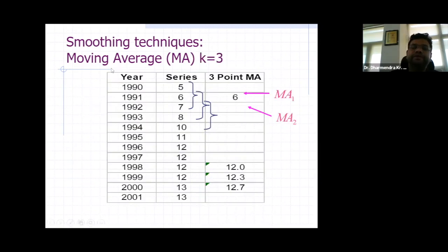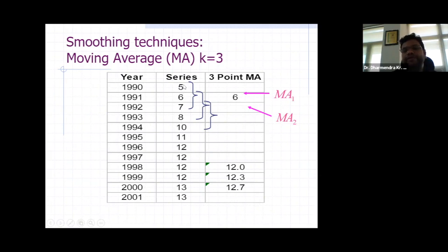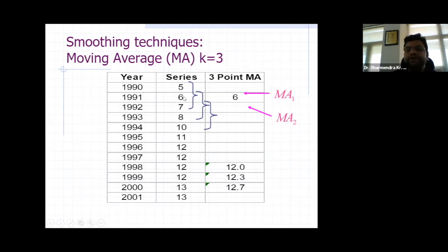Suppose we have yearly data from 1990 to 2001 with values 5, 6, 7, 8, 10, and so on. We calculate the moving average for a three-point time interval. First: (5+6+7)/3 = 6 — this is the first moving average. Then for the second moving average, we omit 5 and calculate (6+7+8)/3. Then (7+8+10)/3. In this way we constitute a series of moving averages.